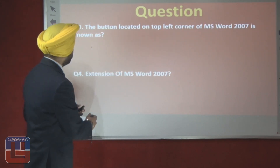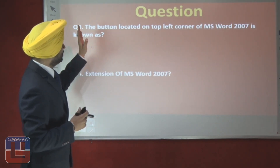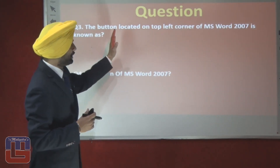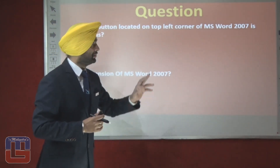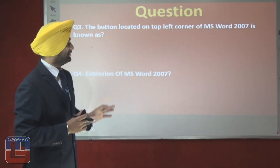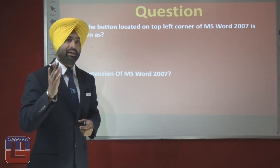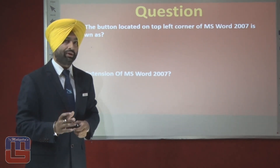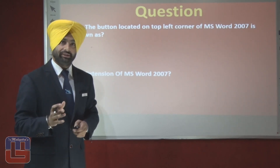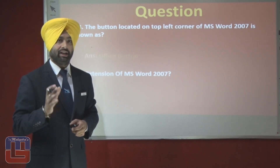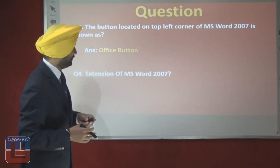Question 3: the button located on the top left corner of MS Word 2007 is known as what? The answer is the office button — the button located on the top left corner of the MS Word window is called the office button.